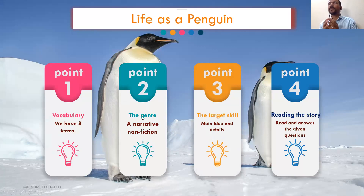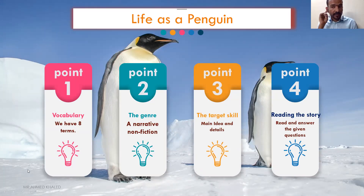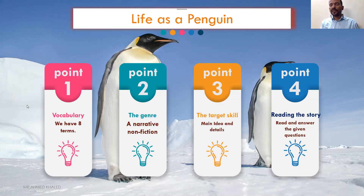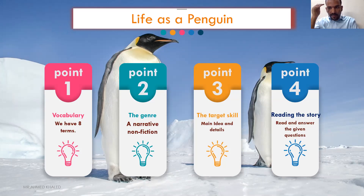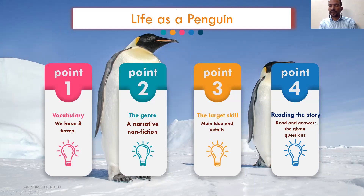Point two is the genre of the story — what type of story is it? Is it humorous fiction, which makes you laugh? Or information text, which gives you facts about a topic? Or narrative nonfiction? It's narrative nonfiction, because the writer used facts and wrote stories using those facts. Point three is the target skill. When you read, there is a skill you will learn. Our skill today is main idea and details — in order to understand the main idea, you have to read details first, so you can infer and predict the main idea. Point four: after reading the story, we are going to read and answer some given questions.